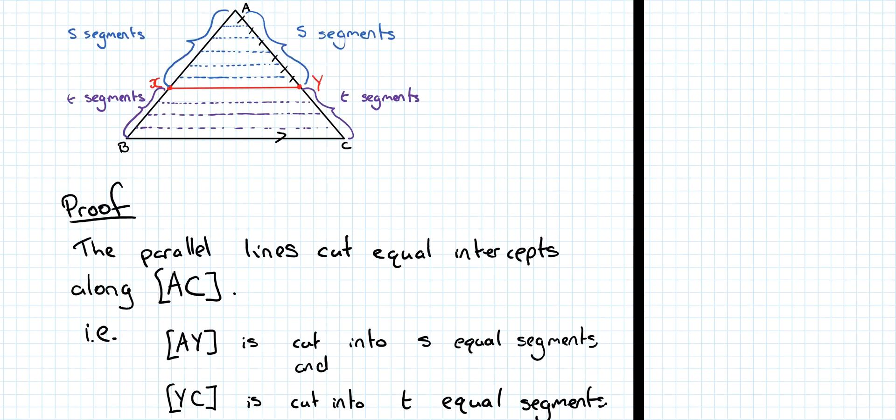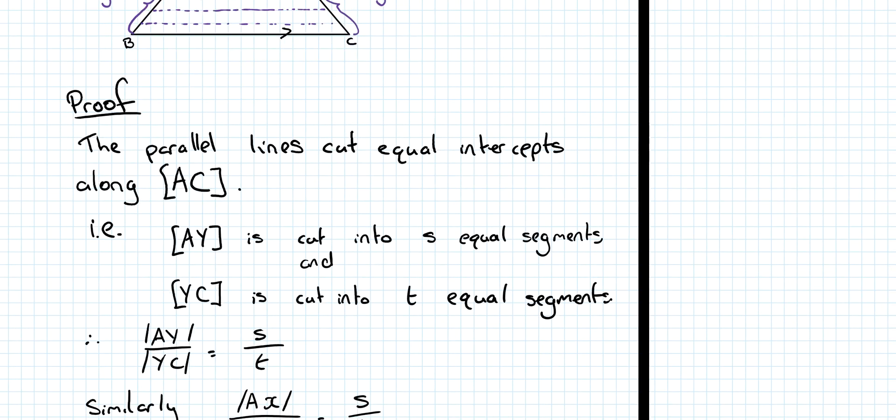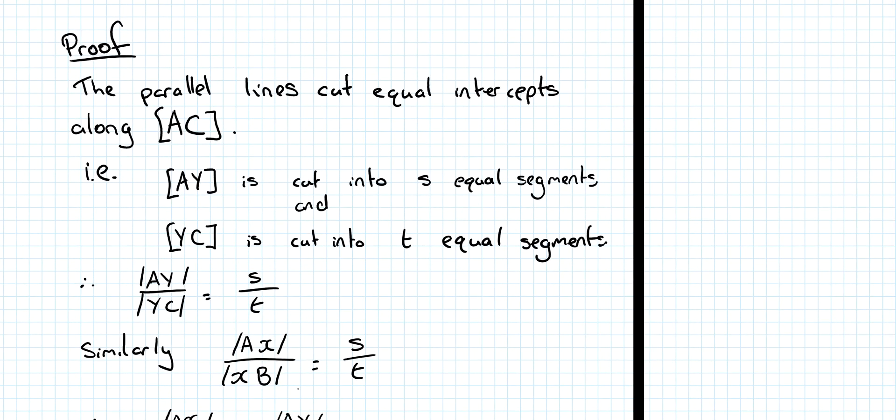But similarly, we acknowledge the fact that in the construction, I split this into S equal segments and this into T equal segments. So, the line AB is split such that AX over XB is also S over T.